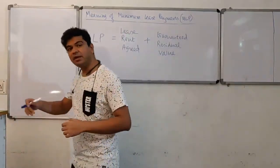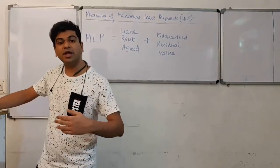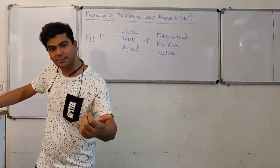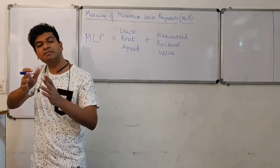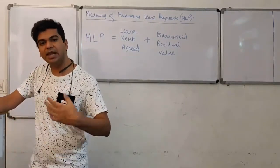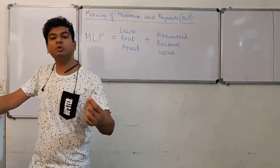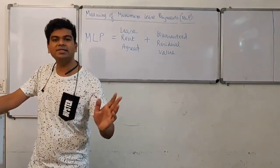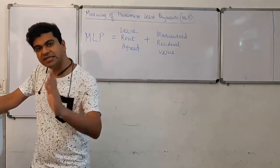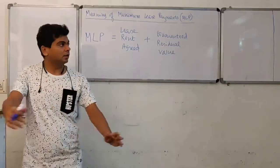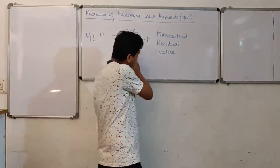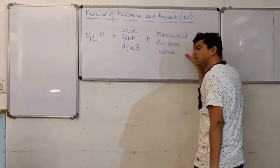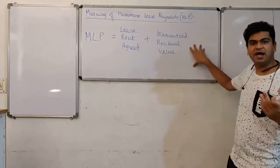In a lease arrangement, the lessor gives a right of using the asset to the lessee, and in return, the lessee will be making payments to the lessor. The mutually decided lease rent between the lessor and the lessee — that lease rent which has been agreed — is the first part of the MLP. The second part of MLP is the guaranteed residual value.